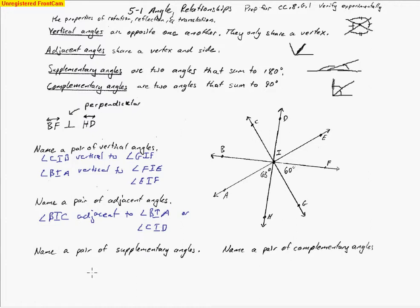Now we're going to name some supplementary angles — angles that add to make 180 degrees. Let's start with angle BIE: angle BIE is supplementary to angle EIF. Notice those are adjacent angles as well, but they're special adjacent angles because they add to make 180 degrees. So BIE and EIF.